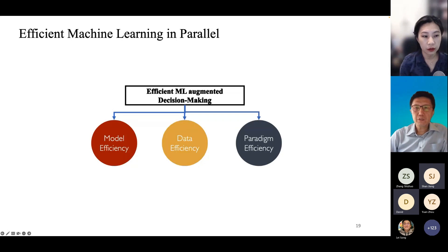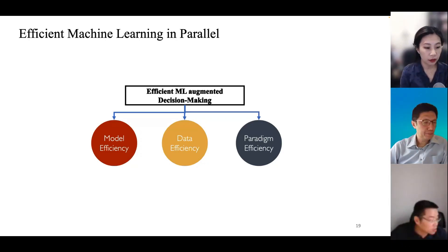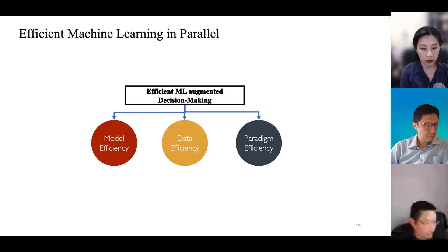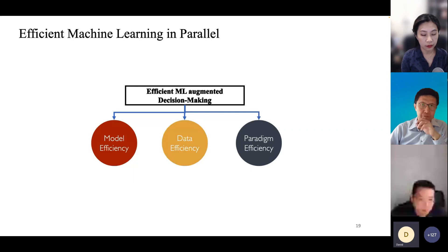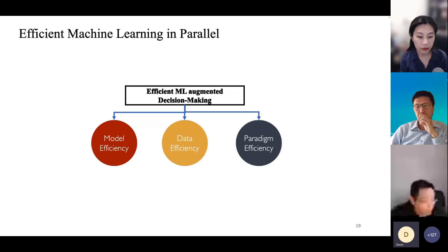Another audience member, Hao Liao, asks: I'm very interested in machine learning for decision making, and I also hear people from the management domain make decision making mainstream in AI. What is your idea about the difference between AI model decision making and human decision making? There seems to be a conflict between being robust and efficient.